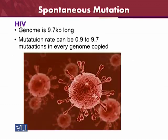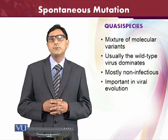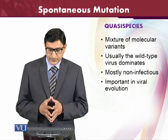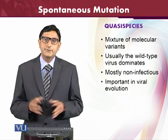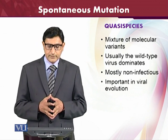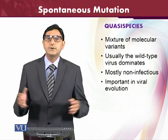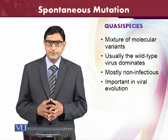Taking the example of the HIV genome, which is 9.7 kilobase pairs in length, the mutation rate can be 0.9 to 9.7 mutations occurring in every genome copied. It is very significant that 0.9 to 9.7 mutations can occur in every genome copied. There are special mixtures of molecular variants present inside the body, also called quasispecies. Usually the wild type of the virus dominates, and most variants are non-infectious and are eventually weeded out from the viral genome.